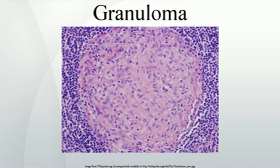Schistosomiasis: Some schistosome ova that are laid in intestinal and urinary venules backwash into the liver via the portal vein, causing granuloma formation in the liver.